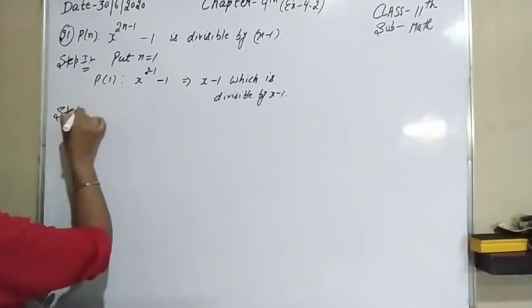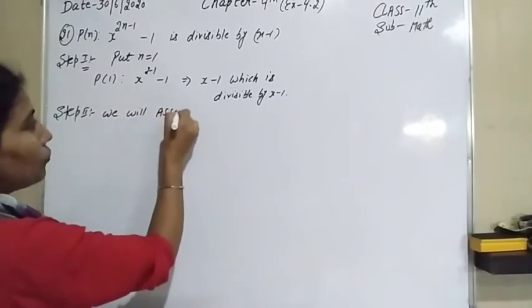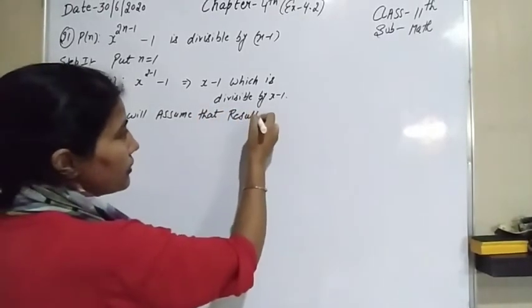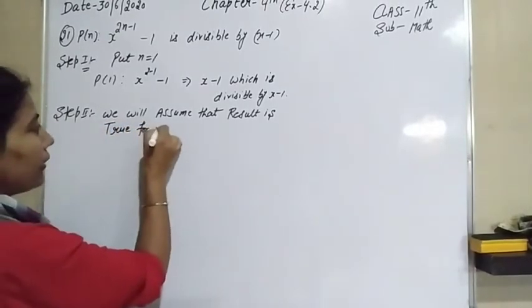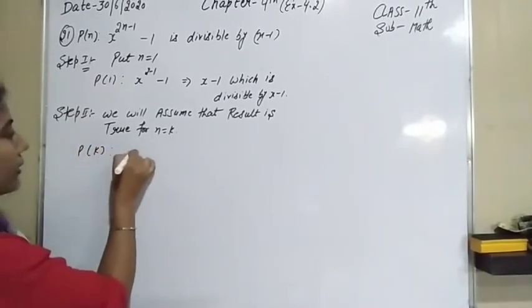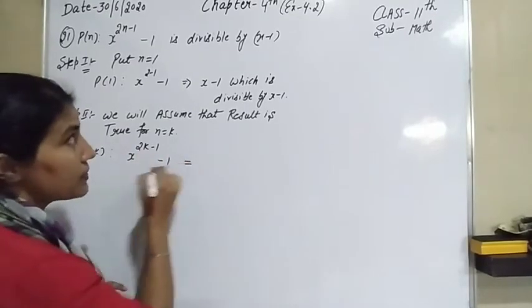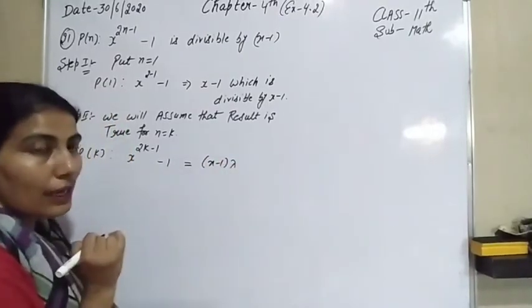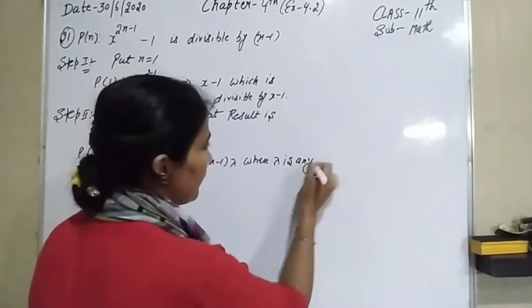In the second step, we assume that the result is true for n equal to k. So P(k) is: x raised to the power 2k minus 1, minus 1, which is divisible by x minus 1. So it can be written as (x minus 1) into lambda, where lambda is any integer.